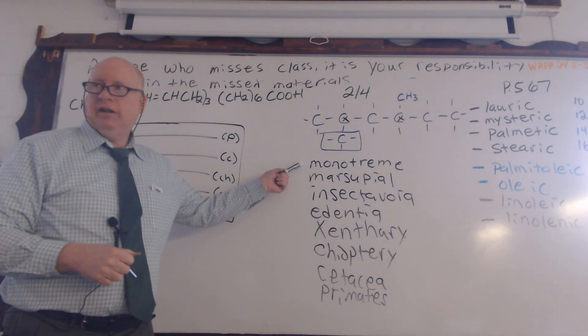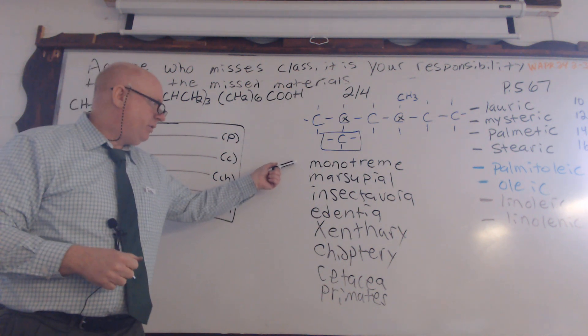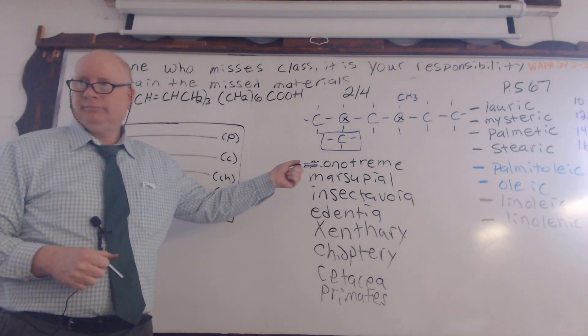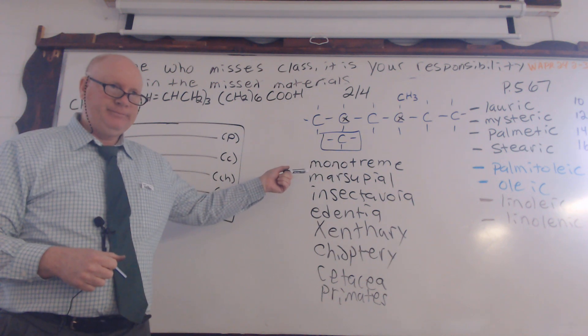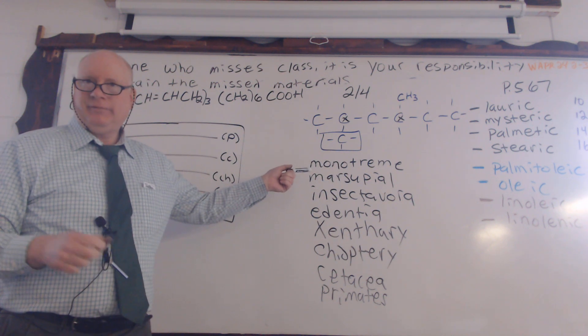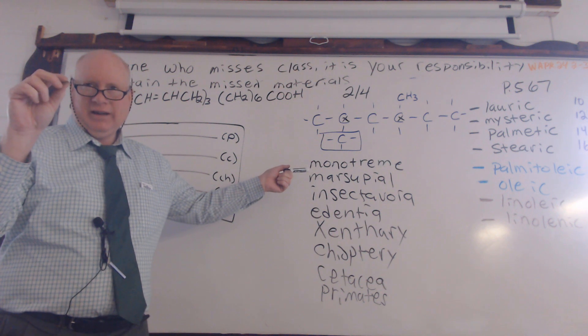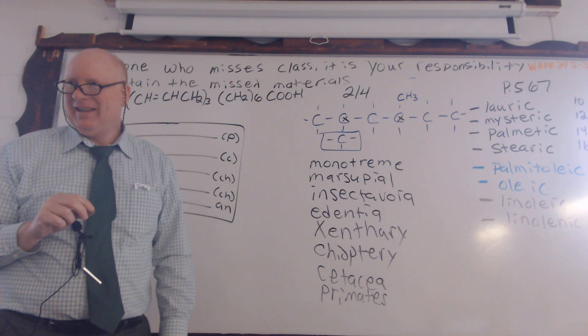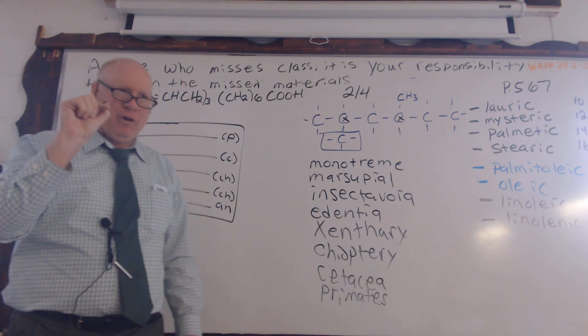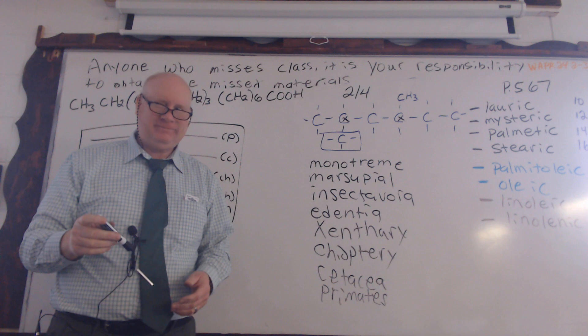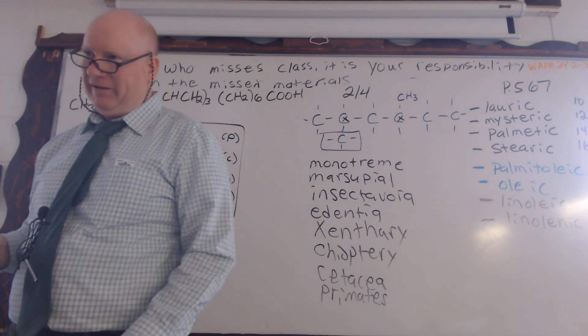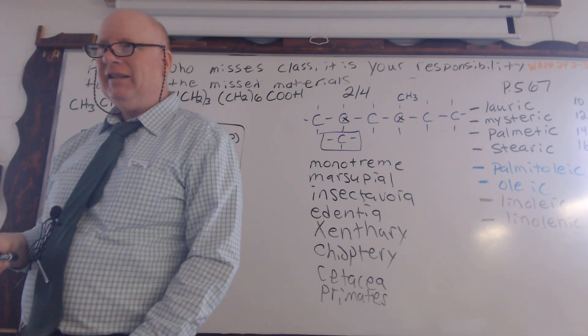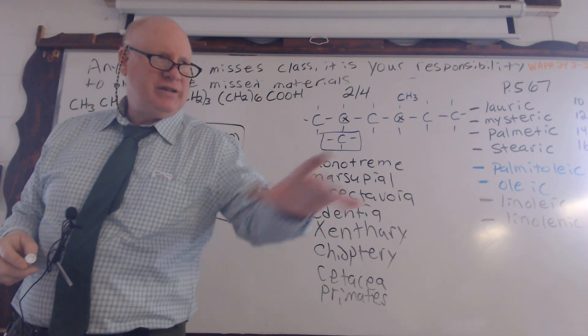Okay. Echidnas. Duck-billed platypus. Who's a marsupial? Kangaroos. Say that again. Yes. Koalas with a K, not a Q. And then don't say this last one wrong. Possum. You did it wrong. You did it wrong. You did that on purpose, saying possum. You did not.